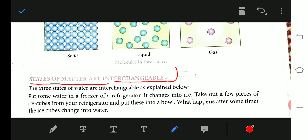The three states of water are interchangeable as explained below. Put some water in a freezer or refrigerator, it can change into ice. This topic explains that matter can change its state by heating and cooling.